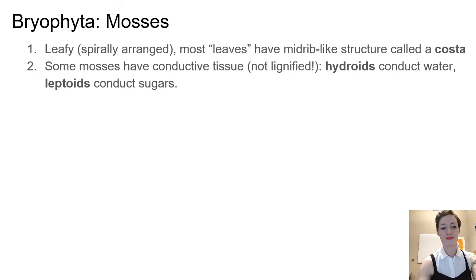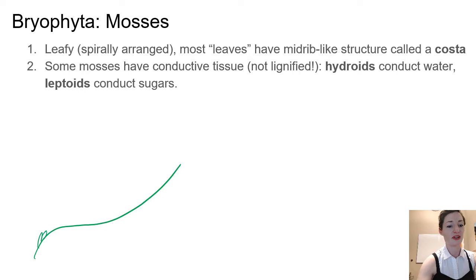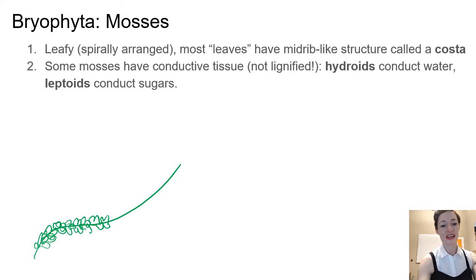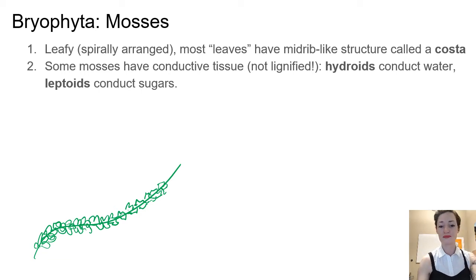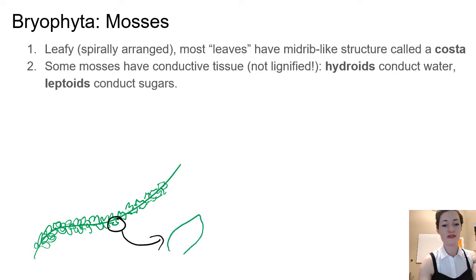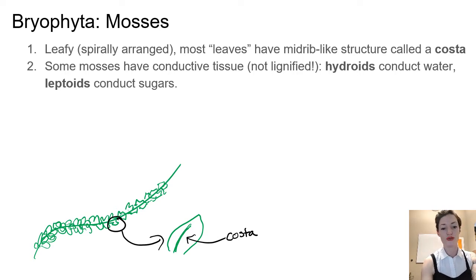What do the bryophytes look like? They are leafy — we have no thaloid bryophytes. We have leafy gametophytes, and those leaves are spirally arranged, so they come out all over this main stem-like structure. They don't just come out in that flat ranked system. Most of those leaves, except in a few groups of mosses, are going to have a structure that looks like a midrib, and that's called the costa. Liverworts never have that; some mosses don't have a costa, most do, but liverworts will never have that.